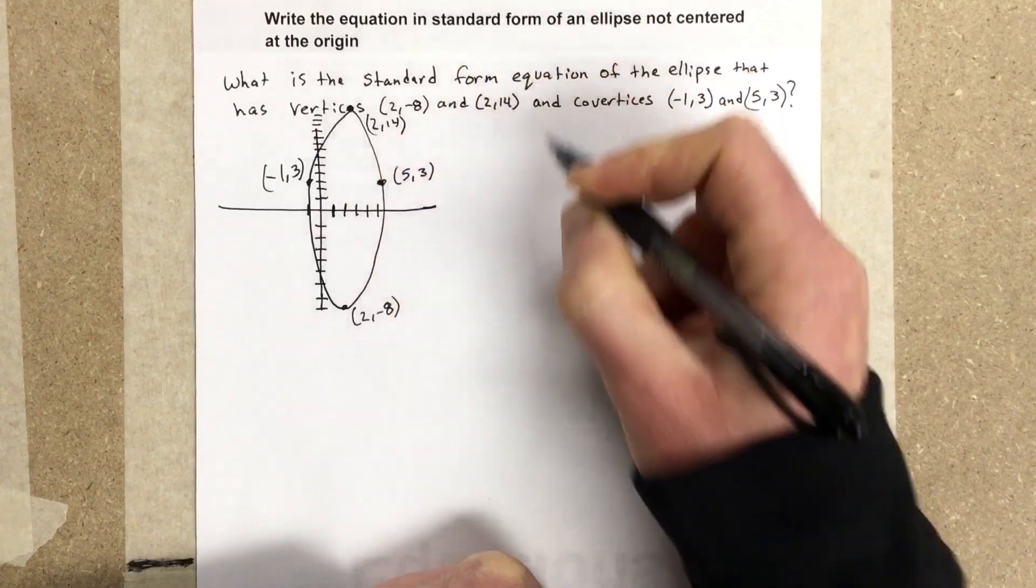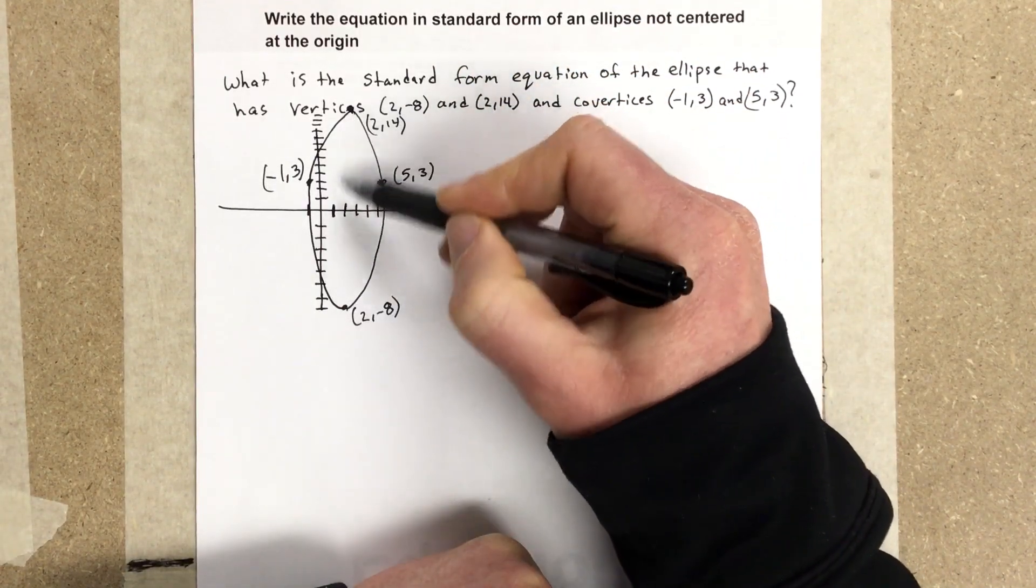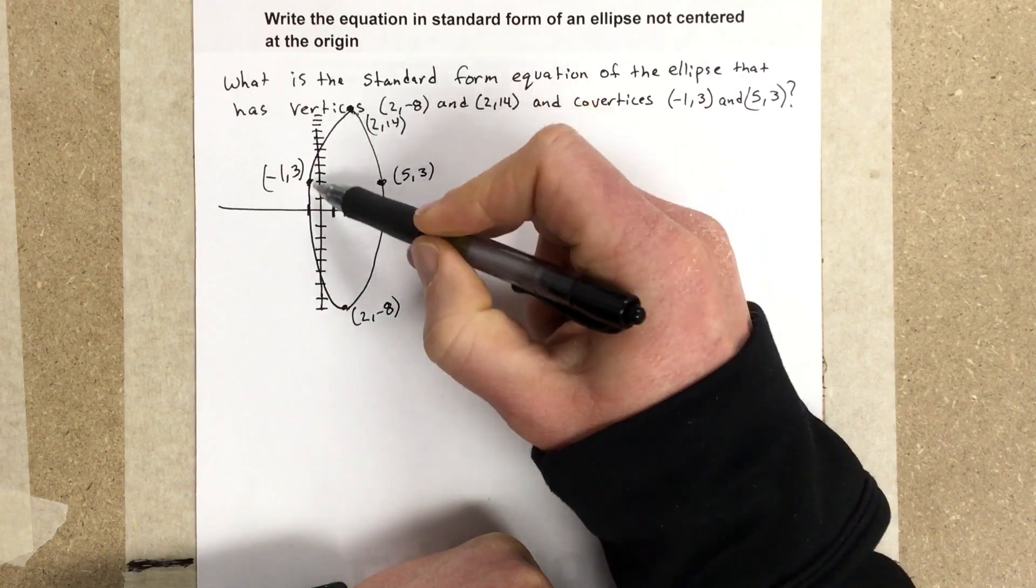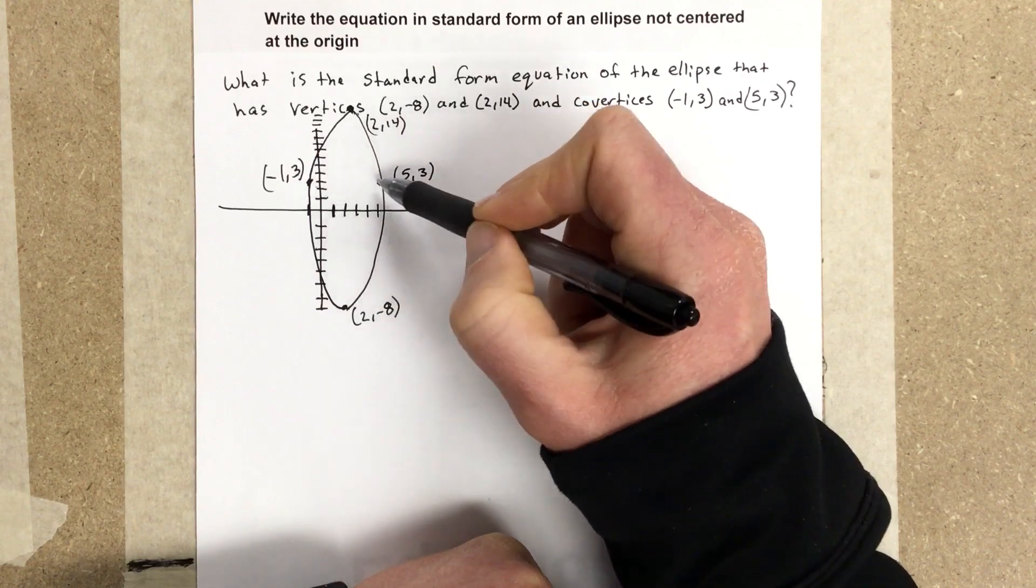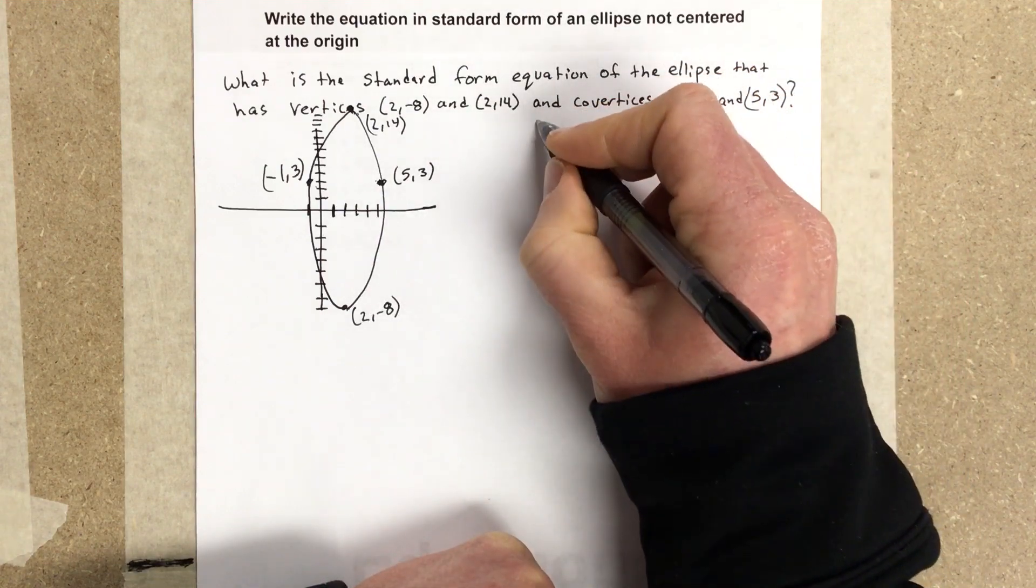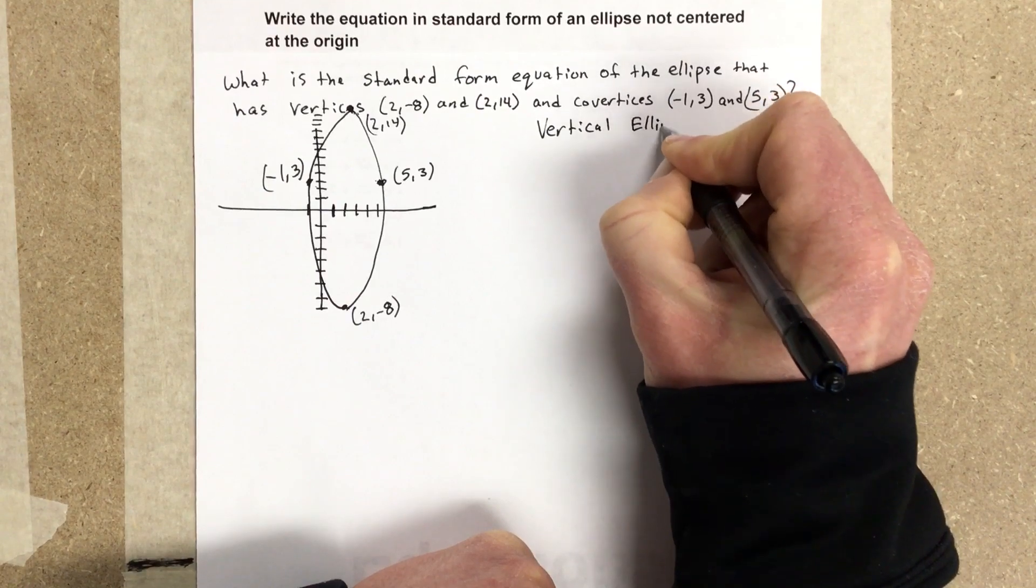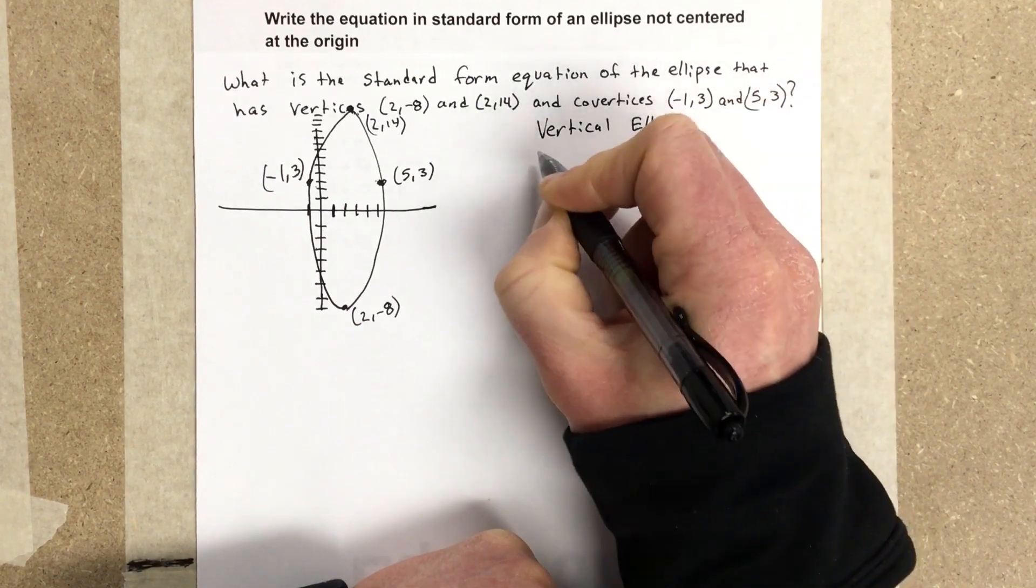Now it's pretty clear that the distance between these two vertices is larger than the distance between these two vertices. So we have a vertical ellipse.